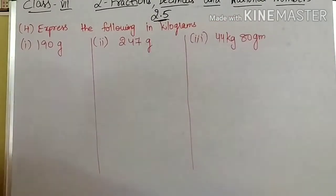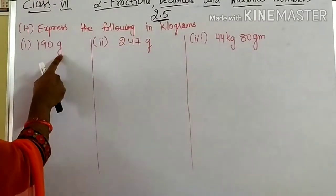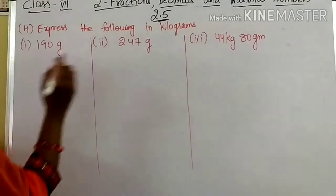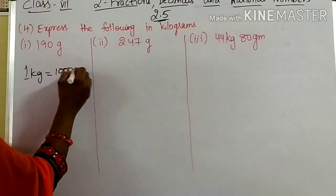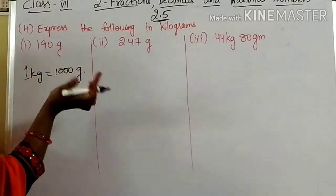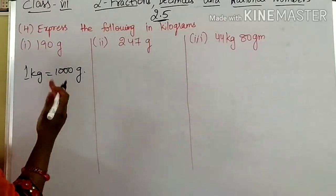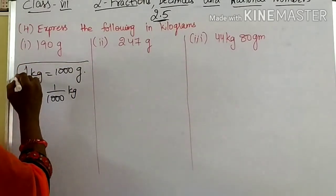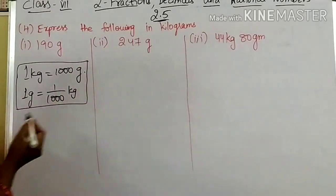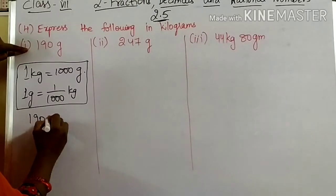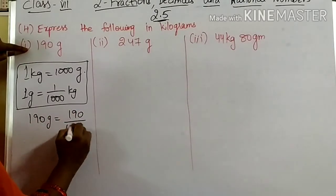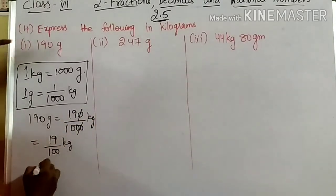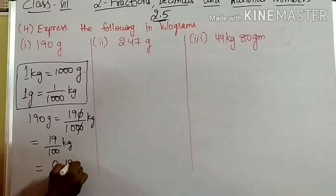Coming to the 4th question: Express the following in kilograms. They are given in grams; we have to convert into kilograms. 1 kg is nothing but 1000 grams. When converting smaller to bigger, we divide. So 1 gram is 1/1000 kg. Therefore, 190 grams is 190/1000 kg. Cancelling zeros: 19/100 kg, which gives 0.19 kg.